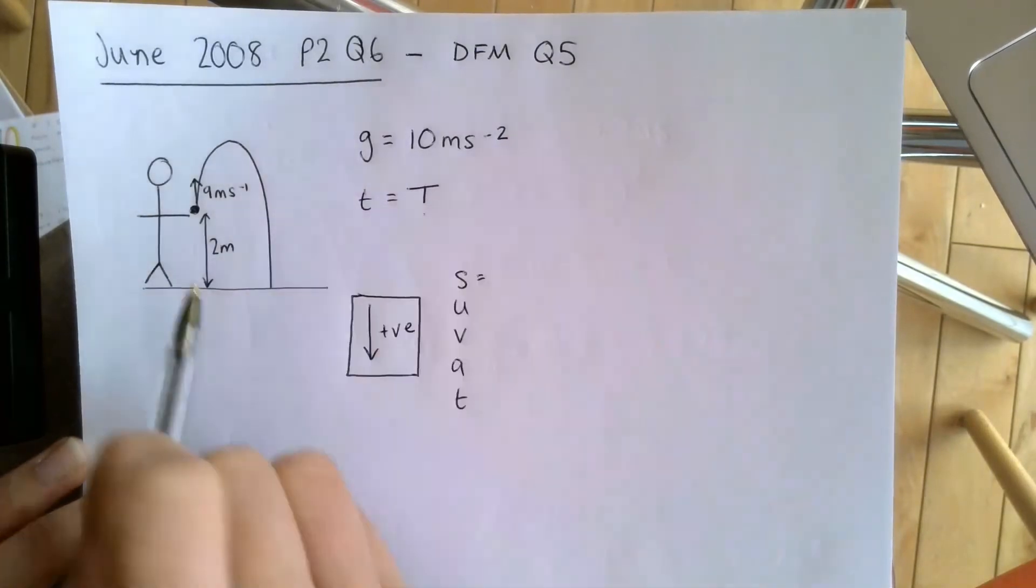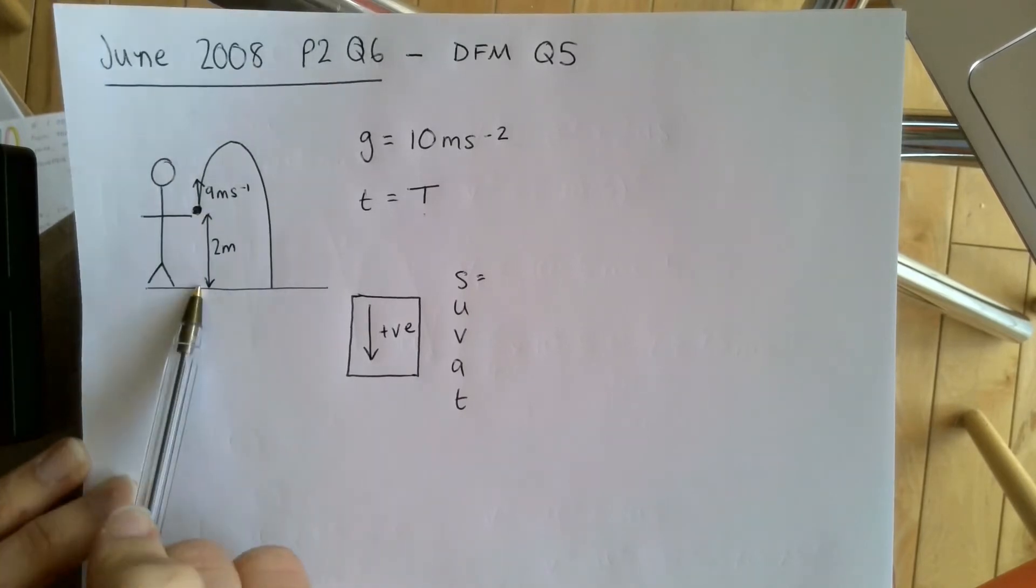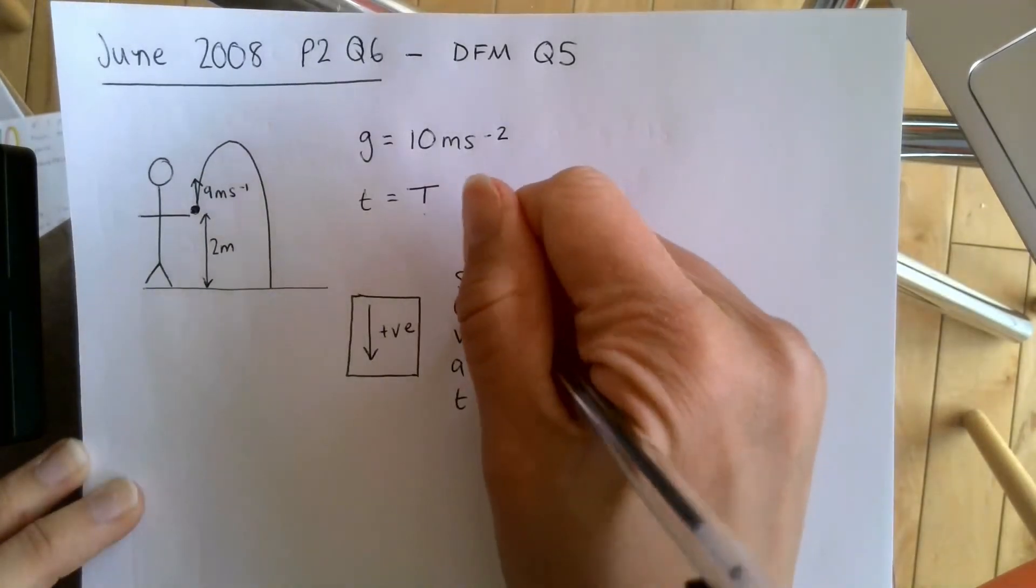The total displacement from the start to the end of the path of the ball, it has traveled downwards by two meters. So the displacement is two meters.